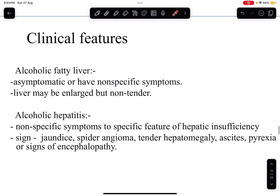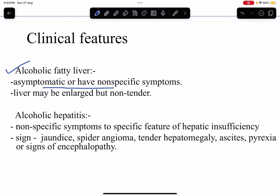Regarding clinical features: in alcoholic fatty liver, the patient usually remains asymptomatic and may have only non-specific symptoms. It is difficult to diagnose until an ultrasonography of the abdomen is done, which shows fat accumulation in the liver. The liver may be enlarged but non-tender — hepatomegaly is the only finding in the fatty liver stage.